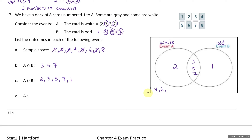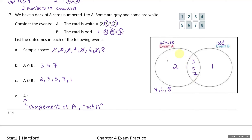Finally, the complement of A — indicated by A with a bar over it — consists of everything not in A, meaning cards that are not white. All cards outside the white circle: 1, 6, and 8.